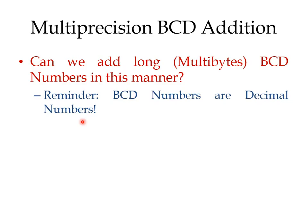This solves our problem for multi-byte numbers. If your number is more than one byte, you can always use this trick: add the lower bytes first, save the result, load the higher bytes, and keep adding no matter how long the number is. But we still have a problem — we know how to add long numbers, but we don't know how to add decimal numbers, because all the addition will be done in hex.